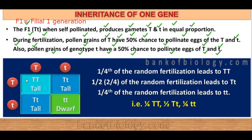Two organisms are heterozygous tall (capital T small t), one organism is homozygous tall (TT), and one organism is homozygous dwarf (tt). In scientific terms: one-fourth of the random fertilizations lead to TT (homozygous tall), half lead to heterozygous tall organisms, and one-fourth lead to homozygous dwarf organisms.